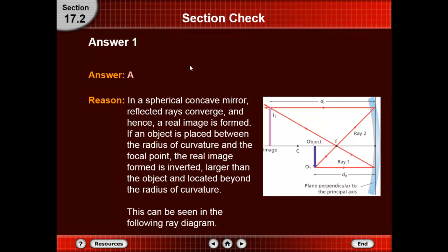When the object is placed between C and F, the image will form beyond C. If we take two rays — ray 1 and ray 2 — when ray 1 passes parallel to the principal axis it will reflect, and ray 2 also reflects. The intersection between these two rays is the place where the image is formed.